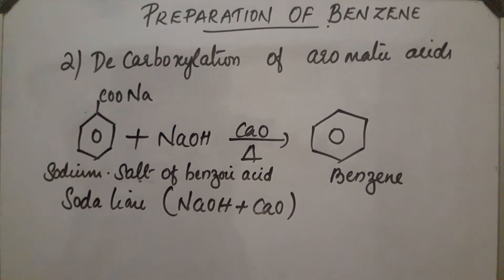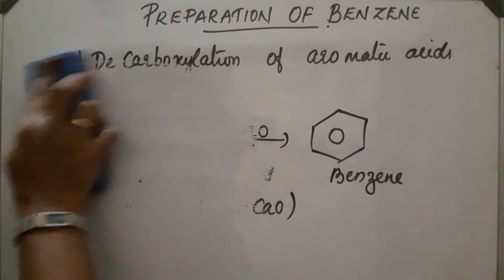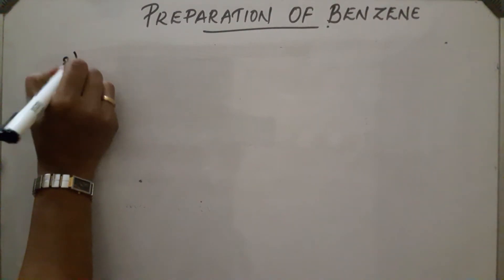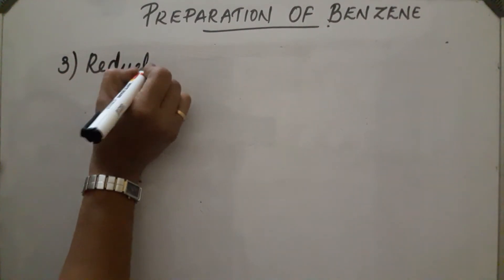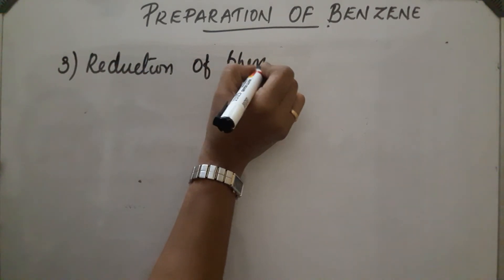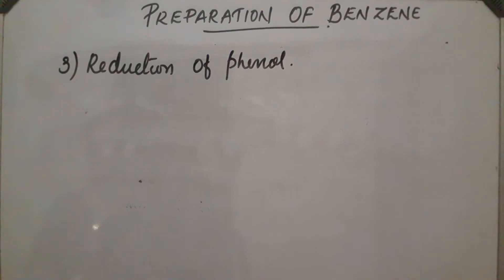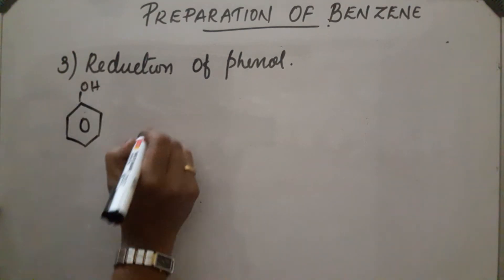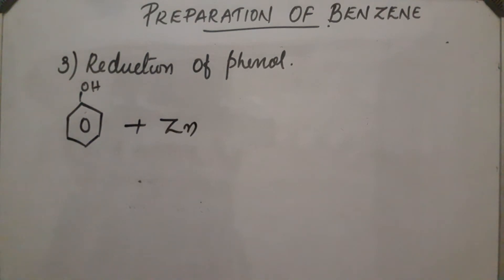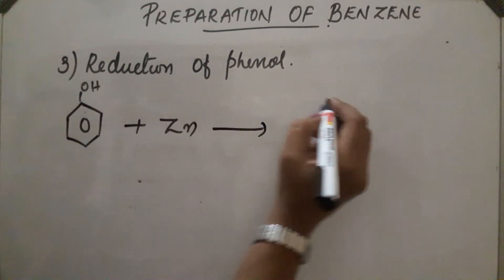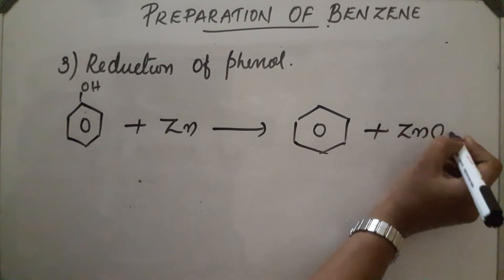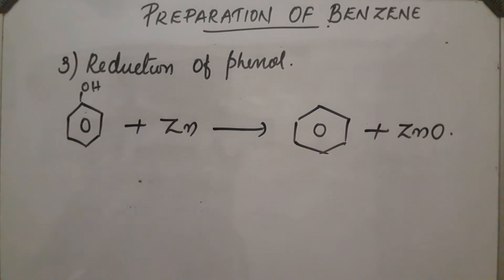The third method is reduction of phenol. The vapors of phenol are passed through heated zinc dust. Reduction of phenol takes place and it gets converted into benzene and ZnO. This is the third method of preparation.